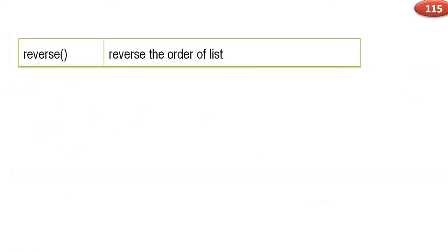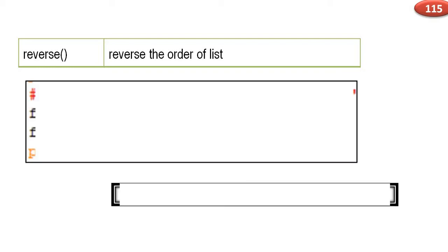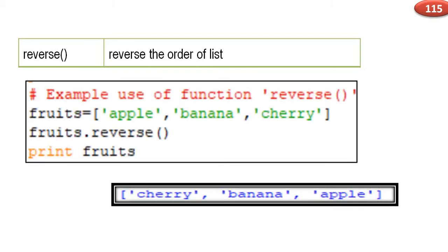reverse() reverses the order of the list. For example, fruits assigned apple, banana, cherry — after fruits.reverse() the result is cherry, banana, apple.